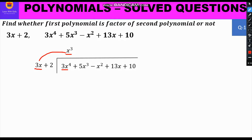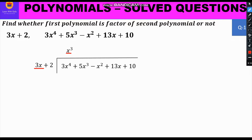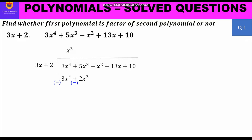Now we move to the second step of multiplication. We multiply x³ with each term of the divisor: 3x × x³ = 3x⁴, and 2 × x³ = 2x³. We write this product just below the first two terms of the dividend. For subtraction, we change the signs: +3x⁴ becomes -3x⁴ and +2x³ becomes -2x³. Then 3x⁴ and -3x⁴ cancel, and 5x³ - 2x³ = 3x³.